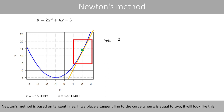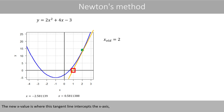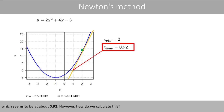Newton's method is based on tangent lines. If we place a tangent line to the curve when x is equal to 2, it will look like this. The new x value is where this tangent line intercepts the x-axis, which seems to be around 0.92. However, how do we calculate this?